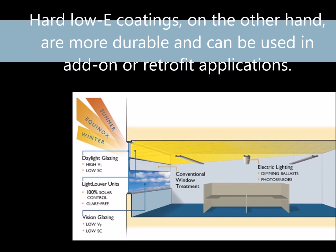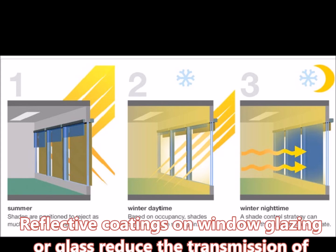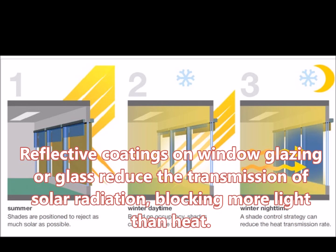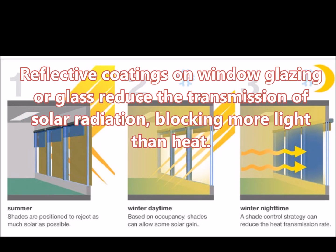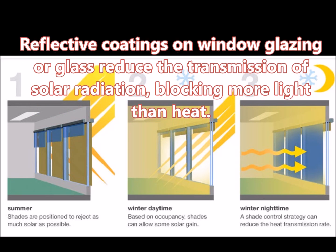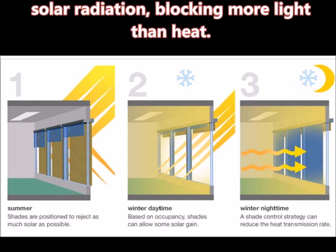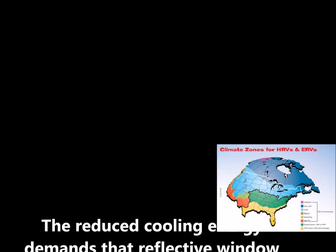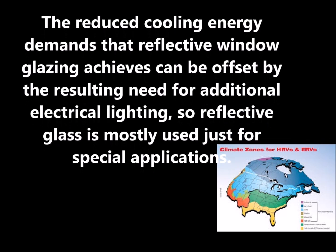Let's look at reflective window glazing or glass. Reflective coatings on window glazing or glass reduce the transmission of solar radiation. They block more heat than light; therefore, they greatly reduce a window's visible transmittance or VT and glare, but they also reduce a window's solar heat gain coefficient or SHGC. Reflective coatings usually consist of thin metallic layers and come in a variety of metallic colors, including silver, bronze, and gold. Reflective window glazing is commonly used in hot climates where solar heat gain control is critical; however, the reduced cooling energy demands they achieve can be offset by the resulting need for additional electrical lighting, so reflective glass is mostly used just for special applications.